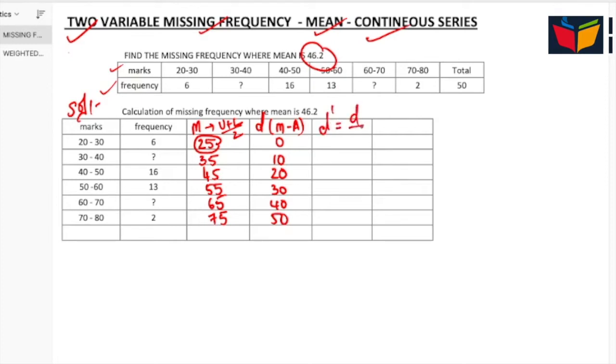Now D complement. D complement is equal to D divided by C. We have D values here divided by C. C is the class interval. Some teachers will use H, some teachers will use C, so no issues, they are one and the same. The difference of these two is our class interval, so the difference is 10. For easy calculation, this is our C, this is our A. So 0 divided by 10 is 0, 10 divided by 10 is 1, 20 divided by 10 is 2, calculate the rest.